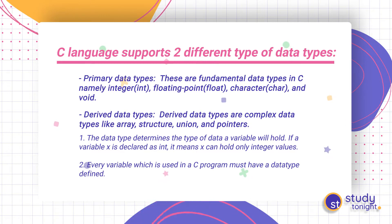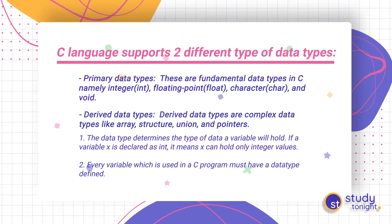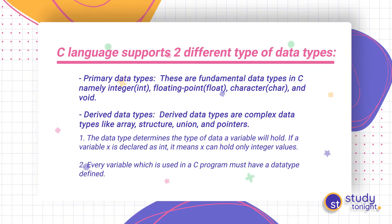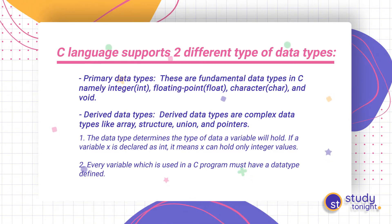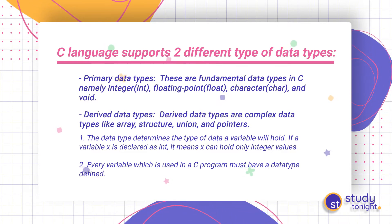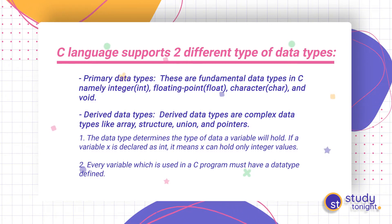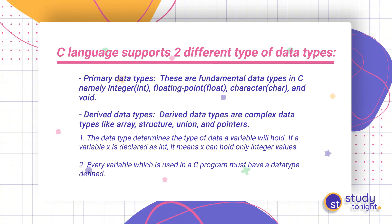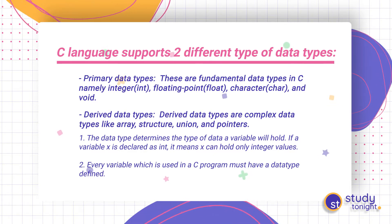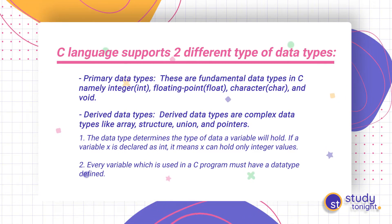What are the primary data types? Primary data types are the fundamental data types in C. Data types determine the type of data a variable will hold. Derived data types are nothing but we use these primary data types with a little twist, or we can group them together — like array, structure, union, or pointer. These things will be discussed later.